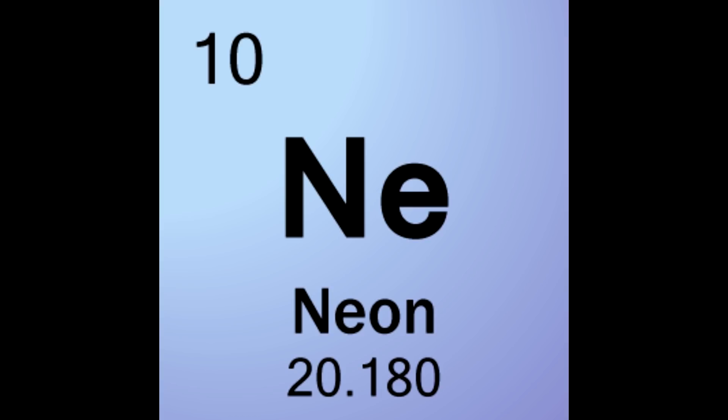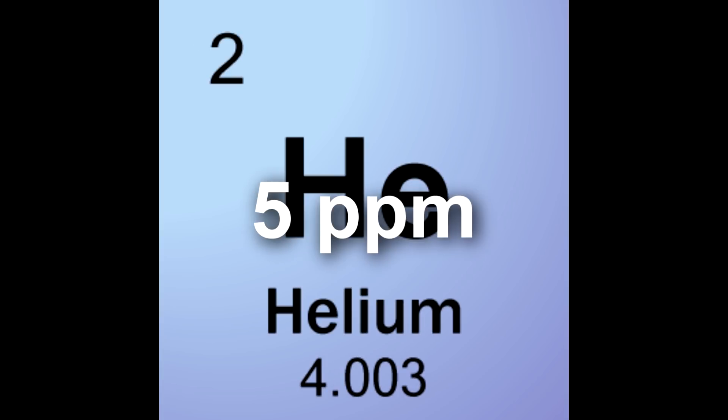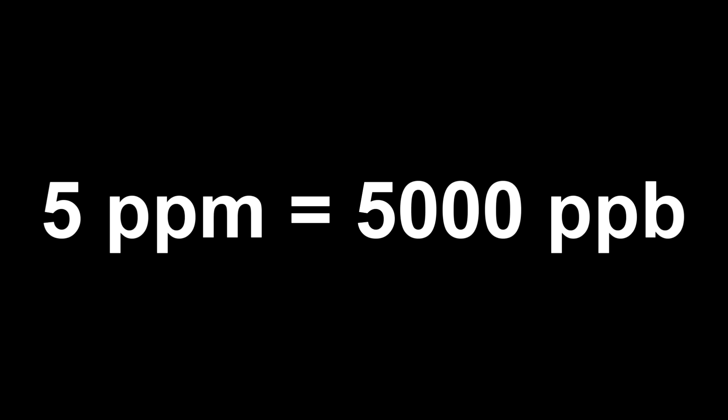Next up we have the two unreactive noble gases of neon and helium at 18 and 5 parts per million. These gases are already pretty trace, with only 5 in a million atmospheric particles being helium. For gases even more trace, we need to increase our measurement precision to parts per billion — so 5 out of a million becomes 5,000 out of a billion.